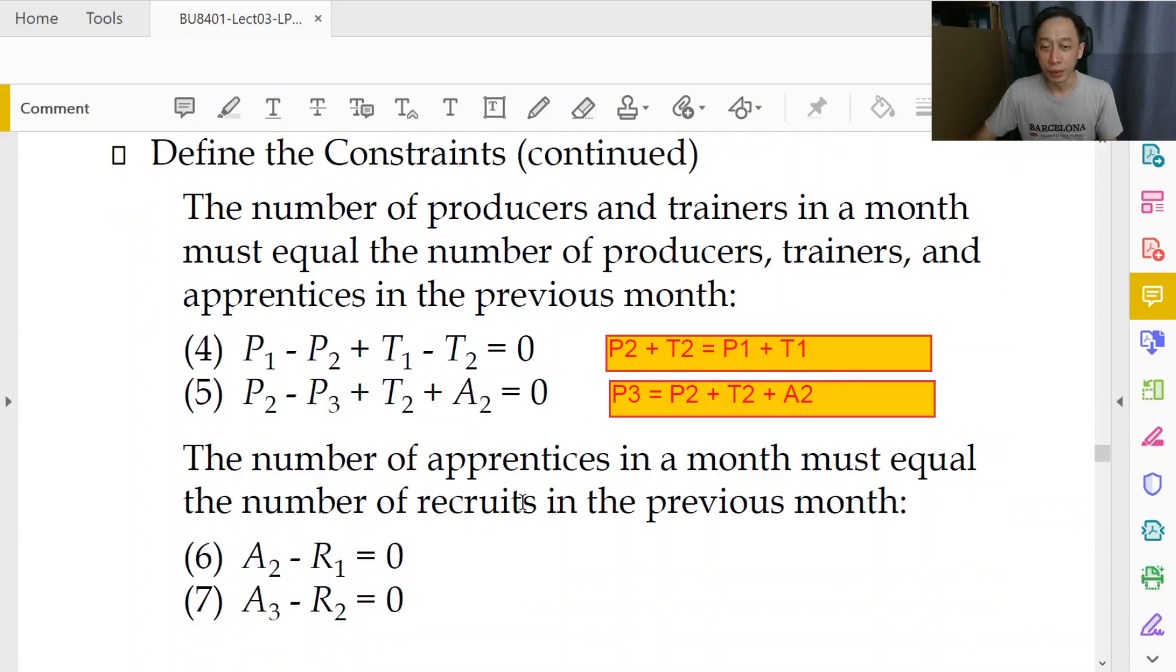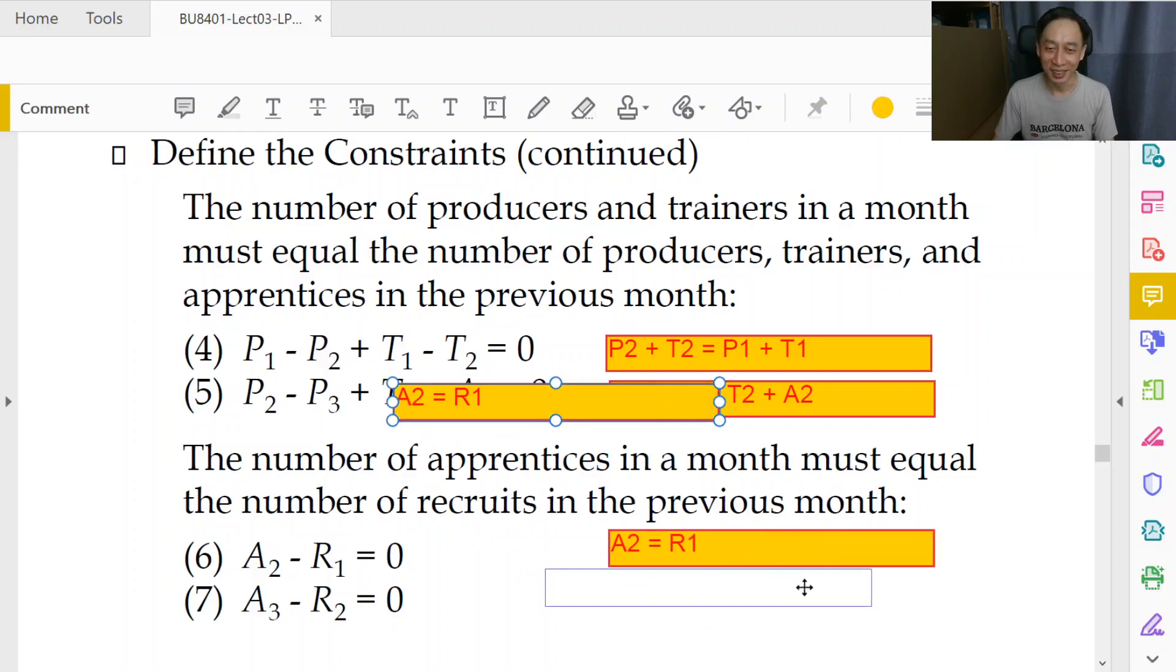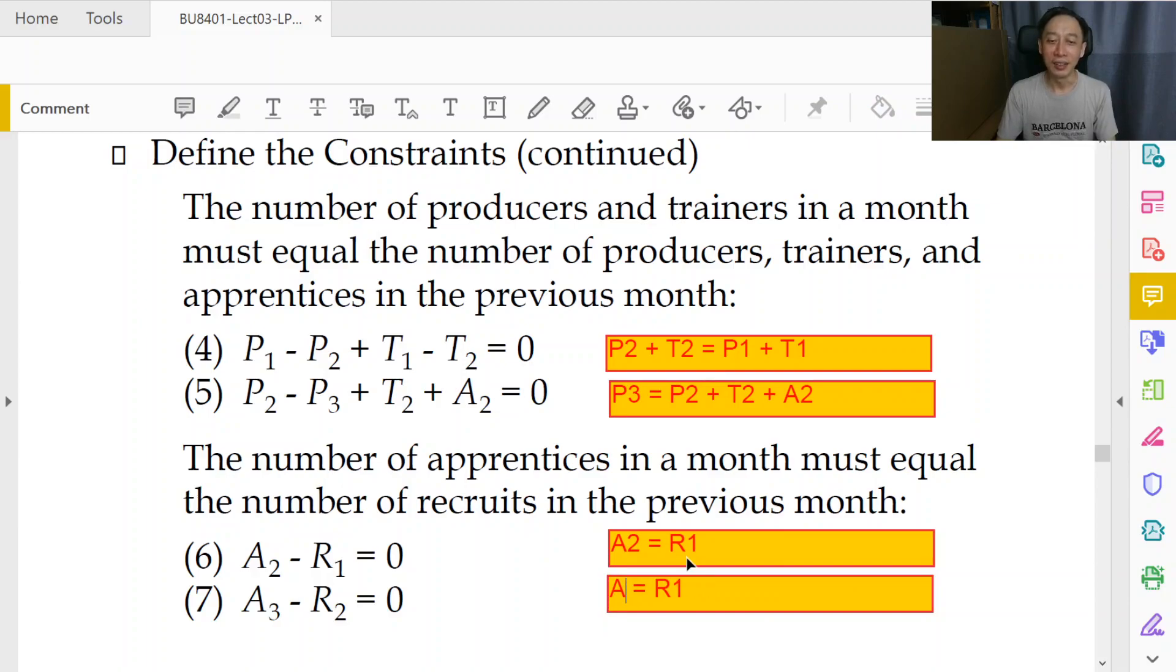Number of apprentices in a month must equal to number of recruits in the previous month because they get promoted. Of course this assumes that the recruits don't resign, this assumes that the recruits are all passing the exams, they don't fail, they are not fired, you know, or they don't quit.